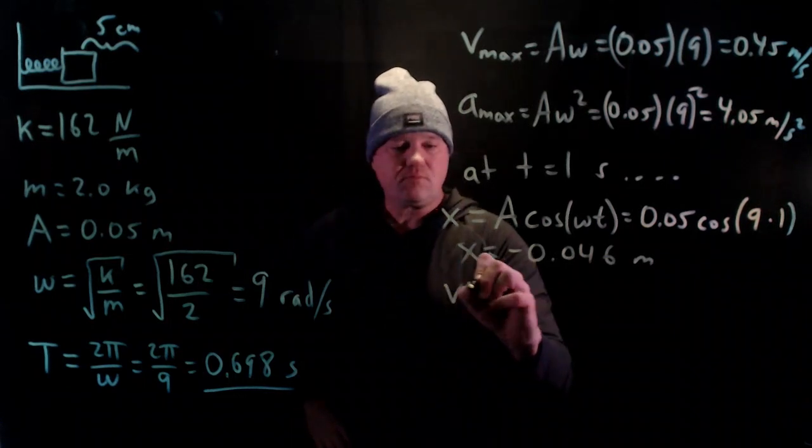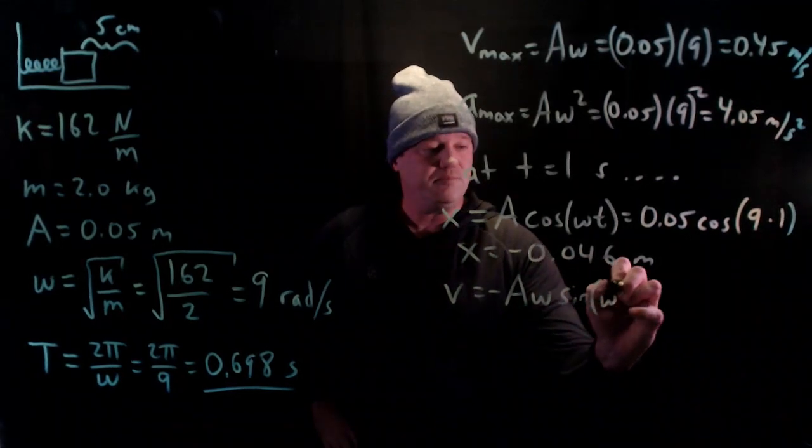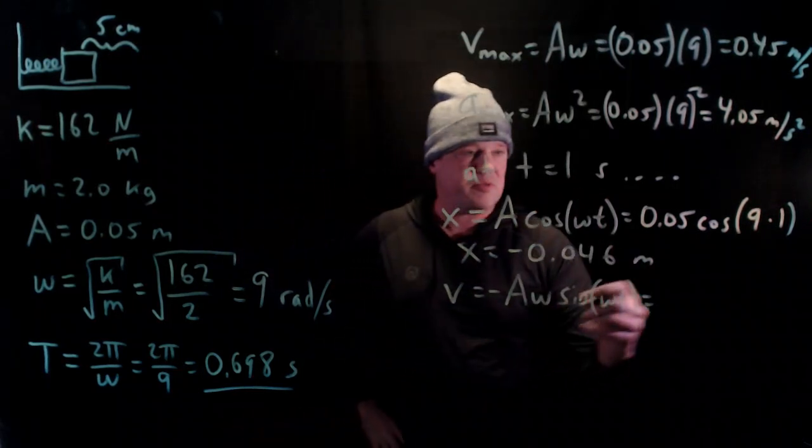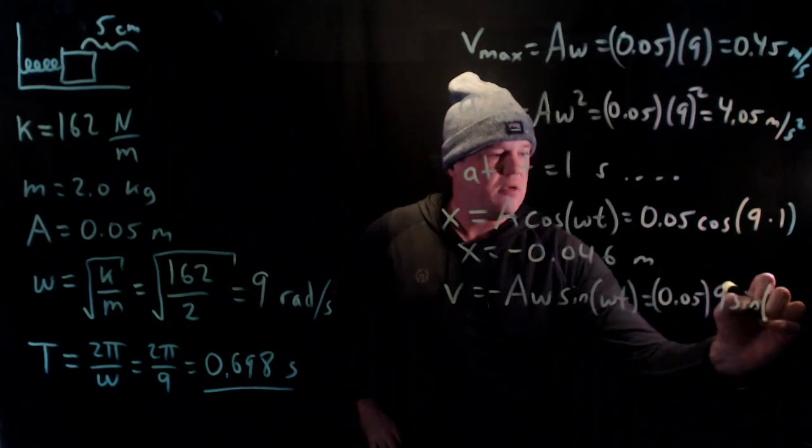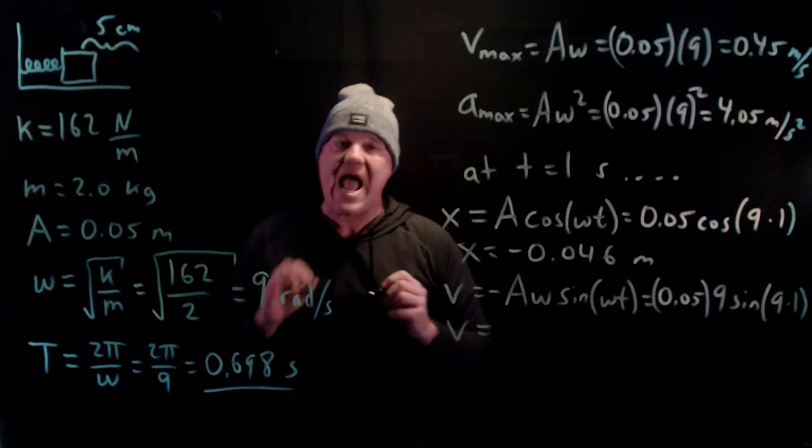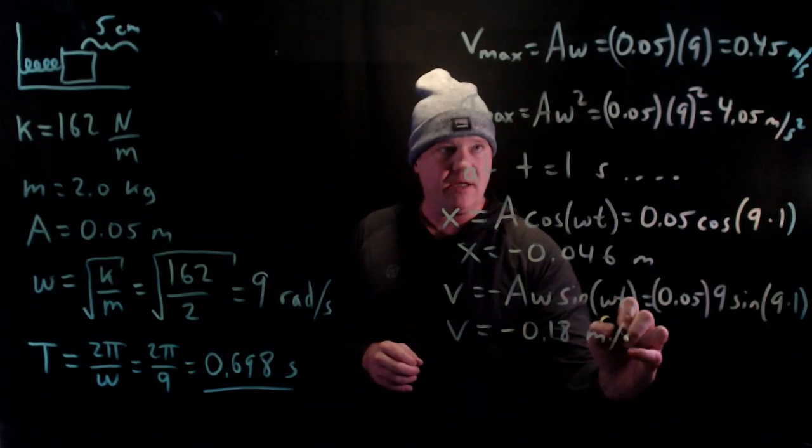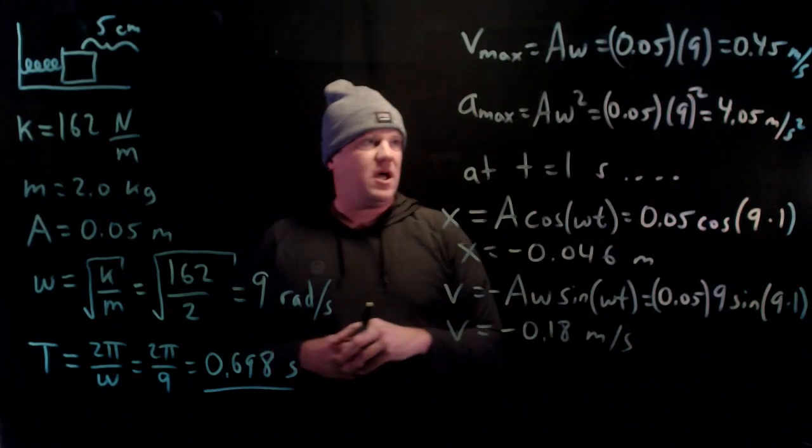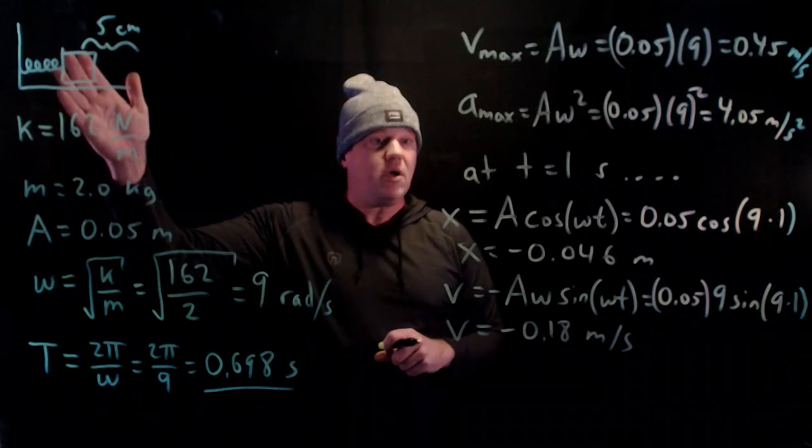Velocity is a similar equation: minus the amplitude times the angular frequency times the sine function: v = -Aω sin(ωt). Those of you who know some calculus might recognize that it's the derivative of that function with respect to time. So -0.05 × 9 × sin(9 × 1) = -0.18 meters per second. It's moving about a third or a half of its maximum speed. That's because it's almost at the turnaround point on the left side.